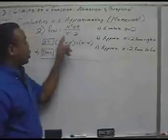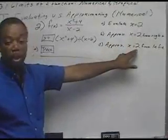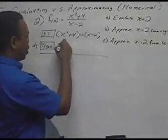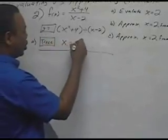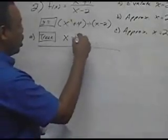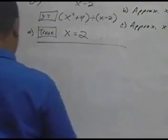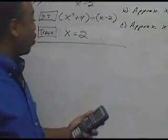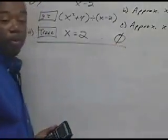Let's take a look at the same function but evaluate it for x = 2, approaching 2 from the right and from the left. I type in Trace, then x = 2 and Enter. I get an error — so this is undefined. There's no solution for that.